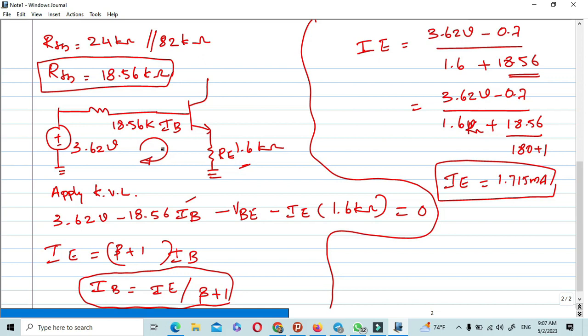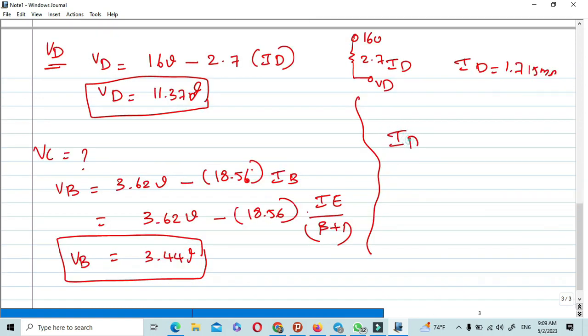IE automatically, we know IE is approximately equal to IC and also equal to ID. So ID also equals 1.715 milliamperes, the value for ID.